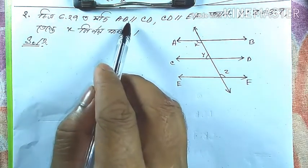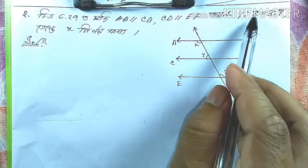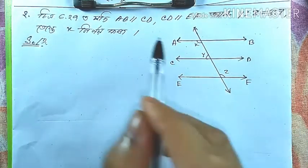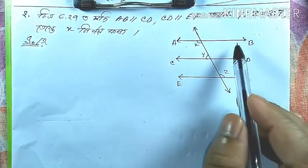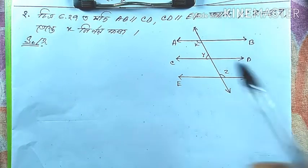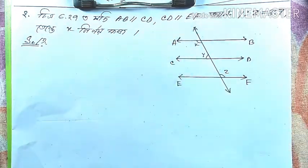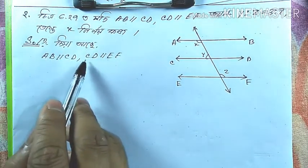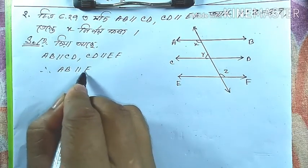Figure 6.29: If AB parallel CD, CD parallel EF. AB parallel CD means AB||CD, and CD parallel EF. So AB parallel CD and CD parallel EF. Let me write it: AB||CD and CD||EF.